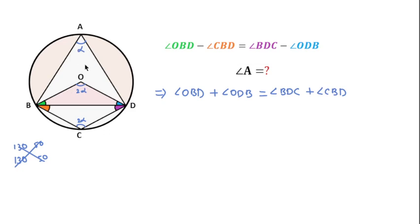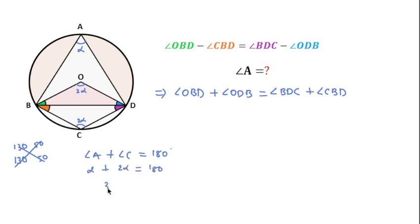By properties of a cyclic quadrilateral, angle A plus angle C equals 180°. Since angle A is α and angle C is 2α, we get 3α equal to 180°, so α equals 60°. But you may be wondering how we know that angle A plus angle C equals 180°.